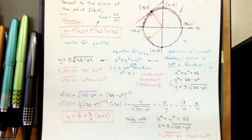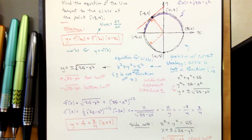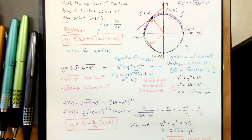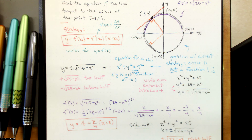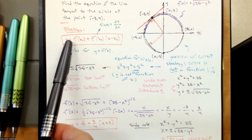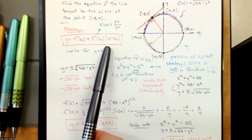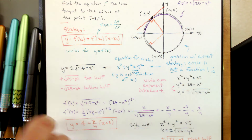There's an inconvenience here. When we write the equation for this circle — x squared plus y squared equals 25 — I can't write one of the variables as one function of the other variable. I have to write two functions: either the top and bottom half, or the left and right half. The equation of the tangent line wants the slope, which is delta y divided by delta x.